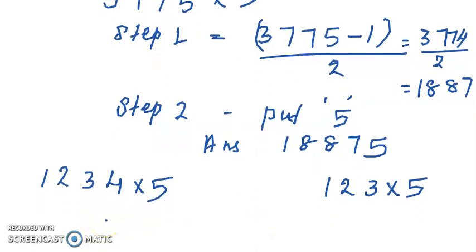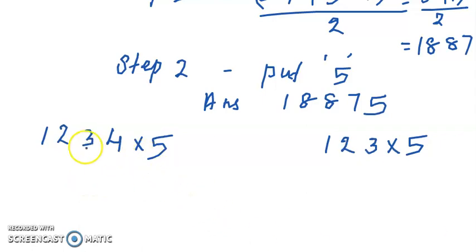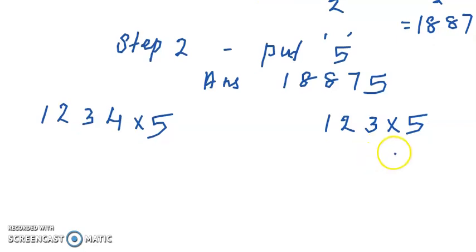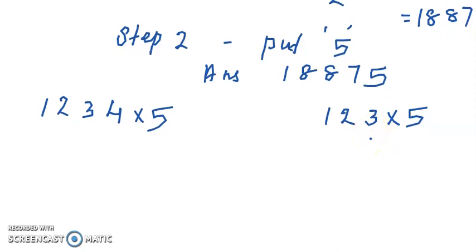In case of even number, you just take the half of that number and put 0. In case of odd number, we subtract 1 from the number, take half of that number, and put 5 at the last.